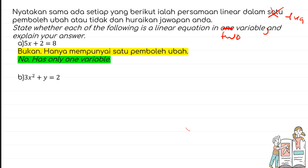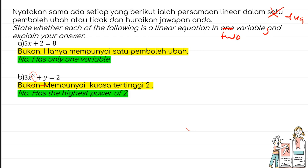The second one: 3x² + y = 2. It does have two variables — x and y — but the highest power of x is two. Since the highest power is not one, the answer is no.